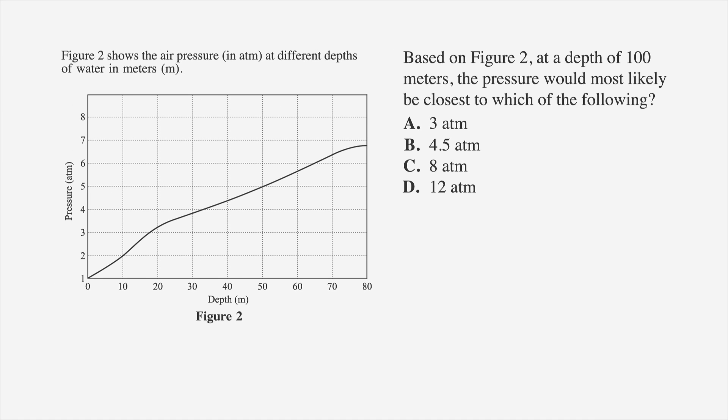Let's look at an example based on the same graph. Based on Figure 2, at a depth of 100 meters, the pressure would most likely be closest to which of the following? Choice A is 3 atmospheres, choice B is 4.5 atmospheres, choice C is 8 atmospheres, and choice D is 12 atmospheres.